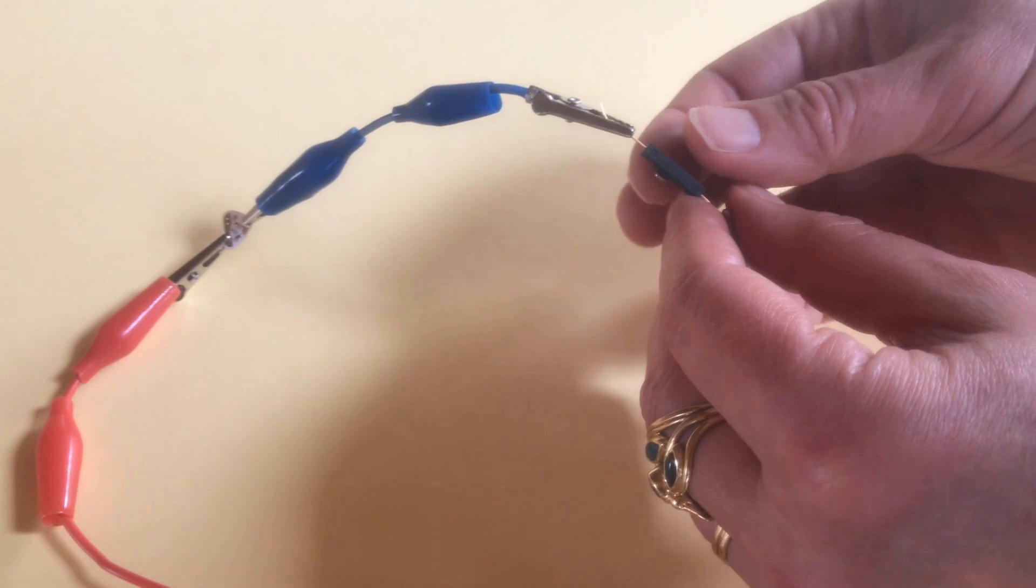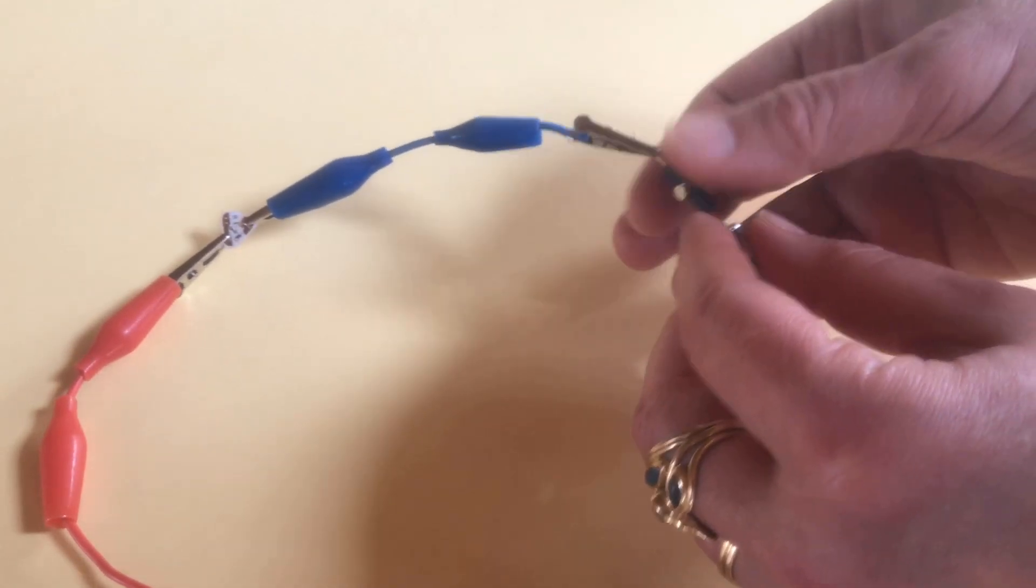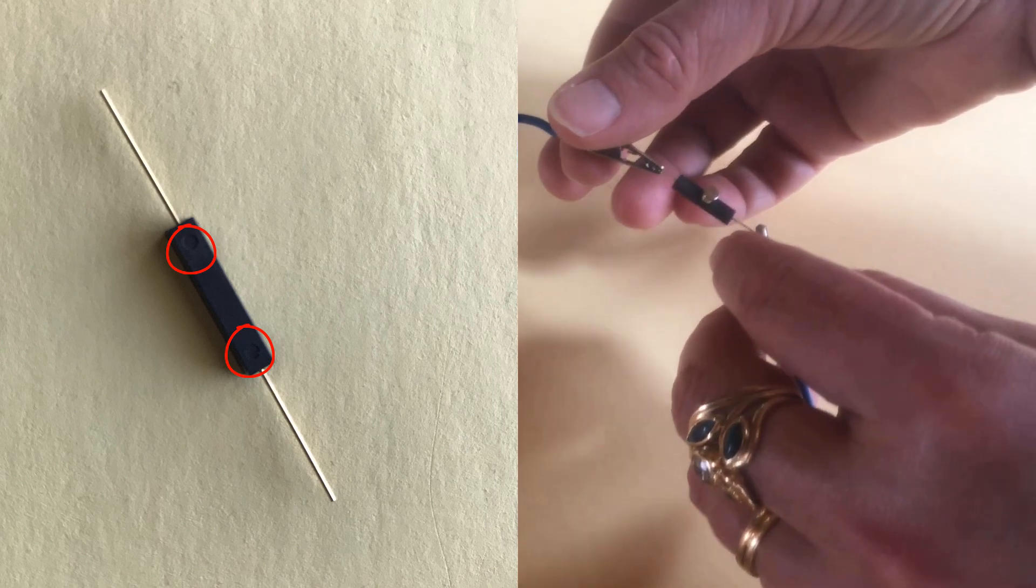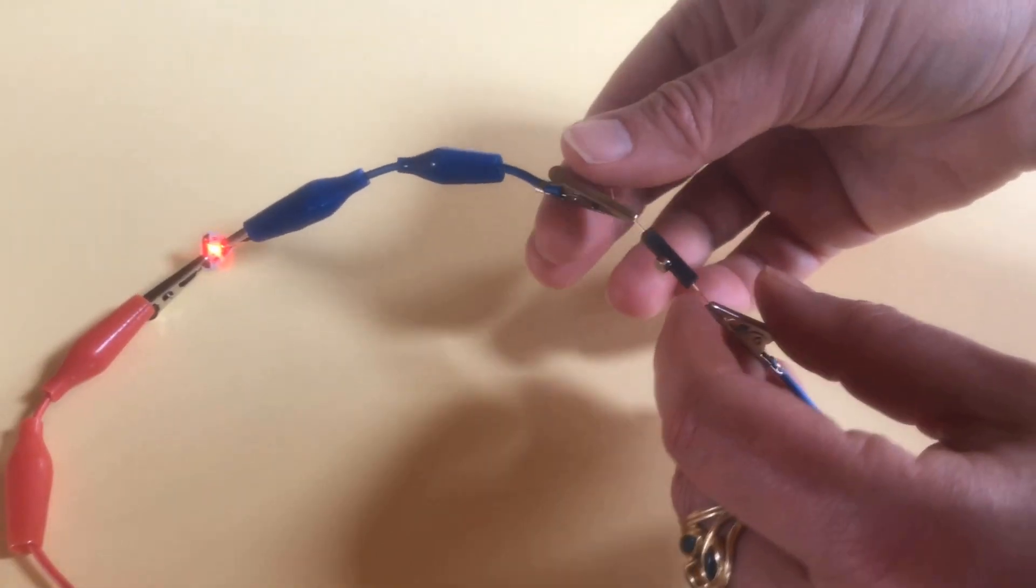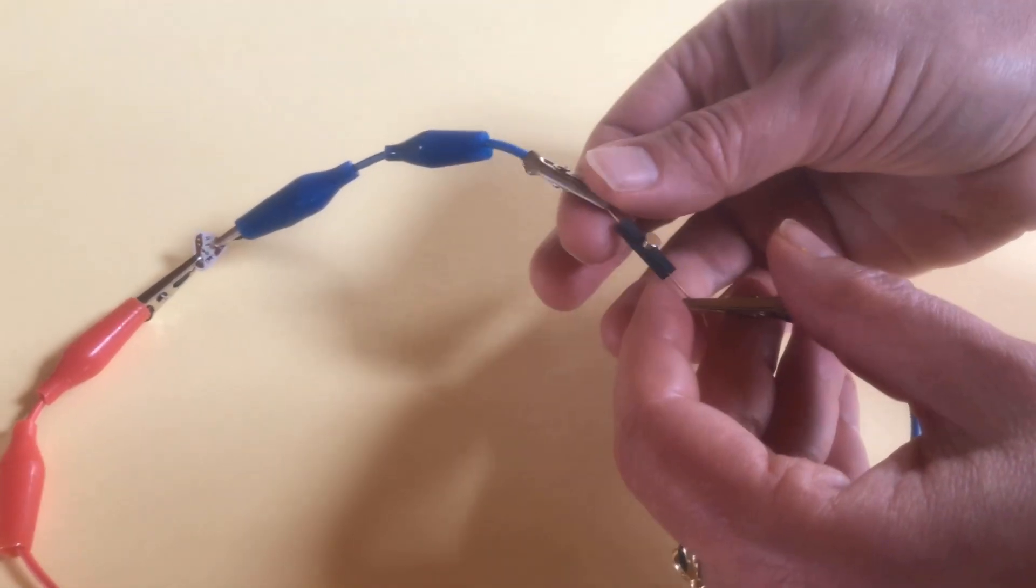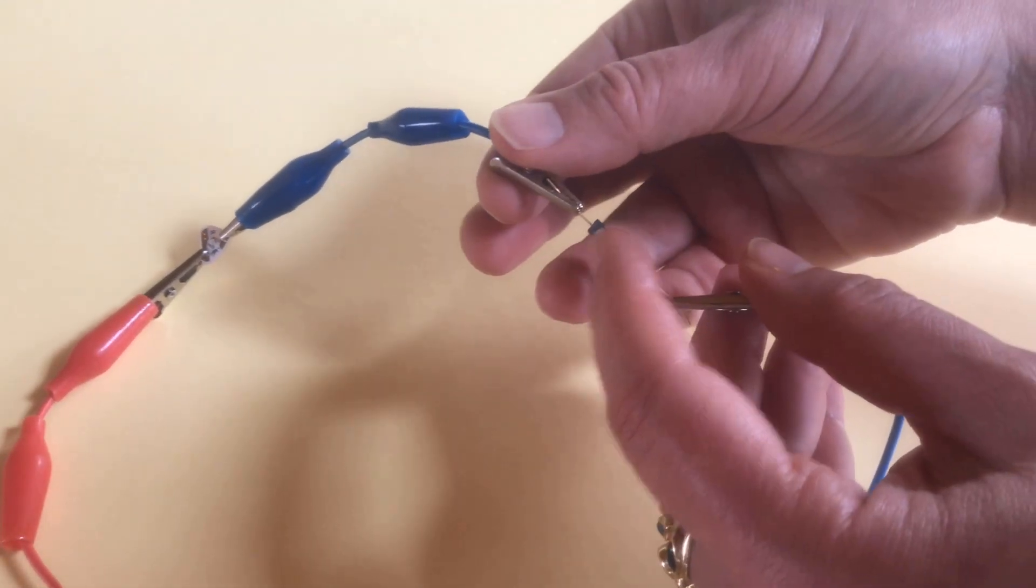The side that I end up picking happens to have two little recessed circles on it. There was only one edge of the reed switch that didn't seem to want to work. So I had three good sides that I could choose from. I ended up picking the one with the two little recessed circles as a visual cue.